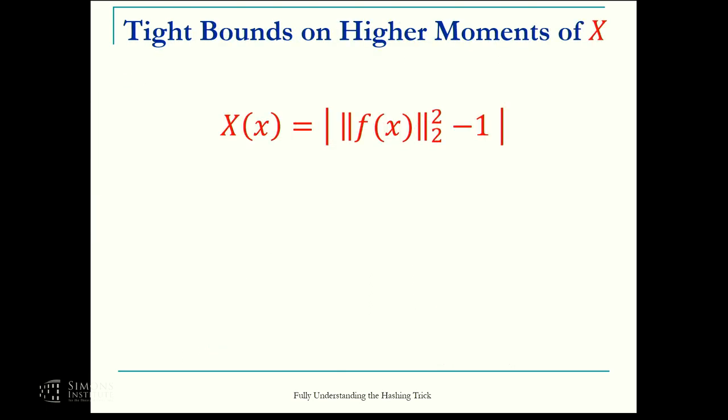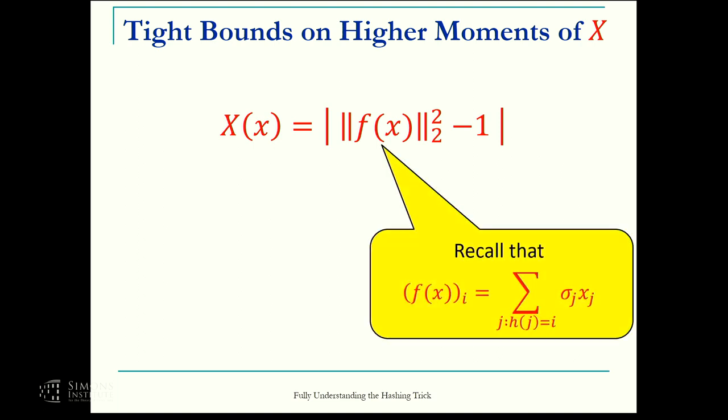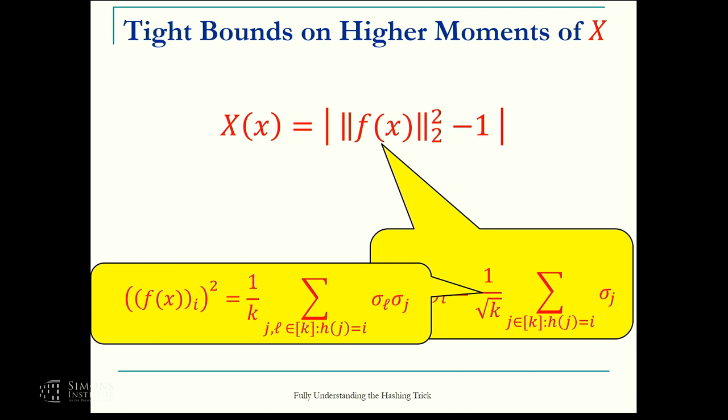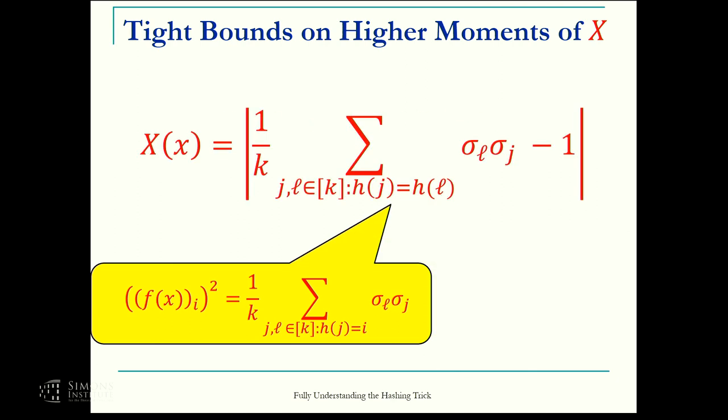This is the hard part of the proof. I'm going to take a few minutes to show you how to expand this. Recall that f(x), the i-th coordinate, is this expression. Let's focus for simplicity on this balanced vector. This is actually the vector on which the lower bound is attained. This is the hardest vector to map. If we square it, we get this. We substitute this and get this nice thing.